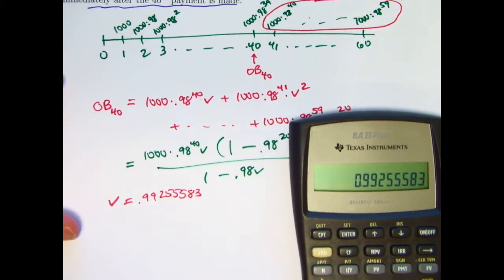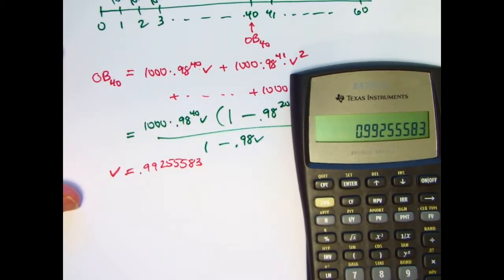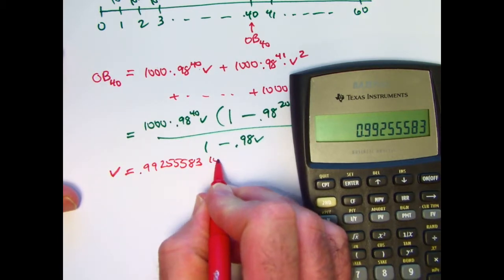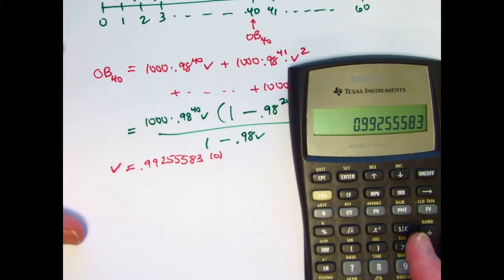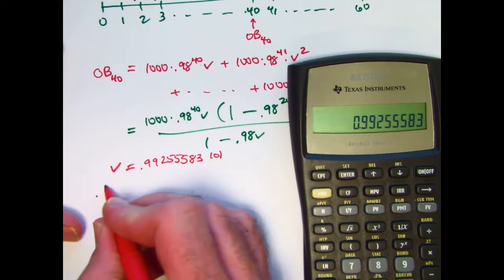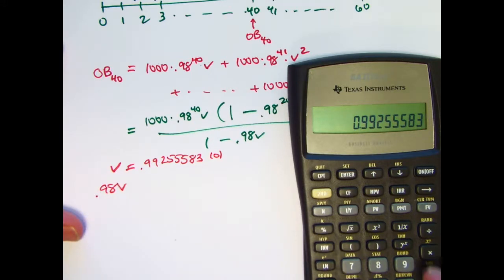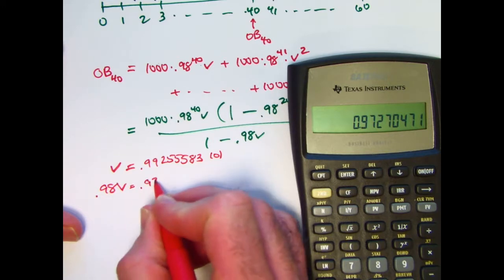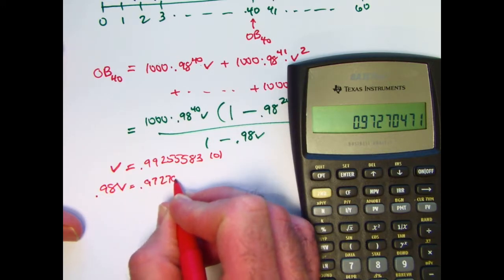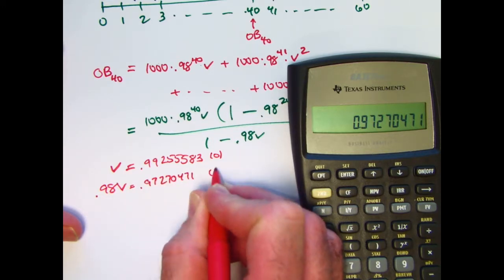Let's also multiply it by 0.98. I'll go ahead and write it down, even though I could just store it. 0.97270471. Let's store that in register 1.